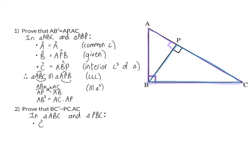Firstly, this time we have common angle C. Angle B is our 90 degree angle and that is the same as angle BPC and that was given to us.